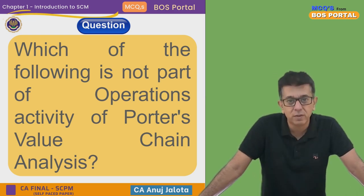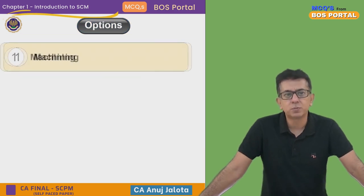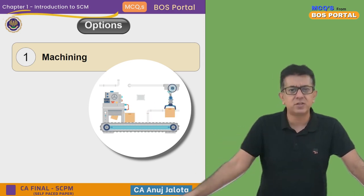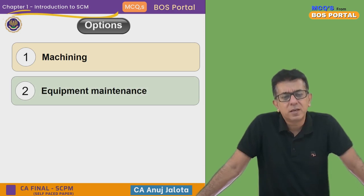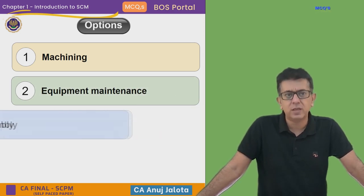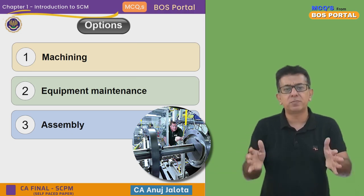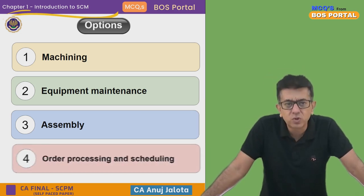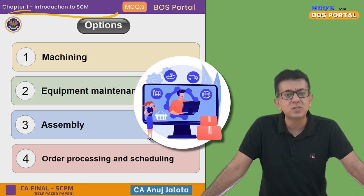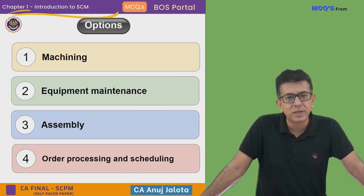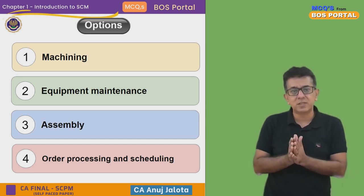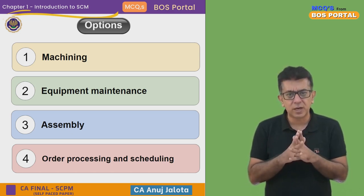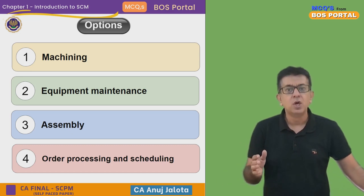Out of the four options, you have to identify which one is not part of operations activity. The first option is machining — goods are getting produced through machines. The second is equipment maintenance — you maintain the equipment so it runs properly. The third is assembly — parts are scattered, workers assemble them into a final product. The fourth is order processing and scheduling.